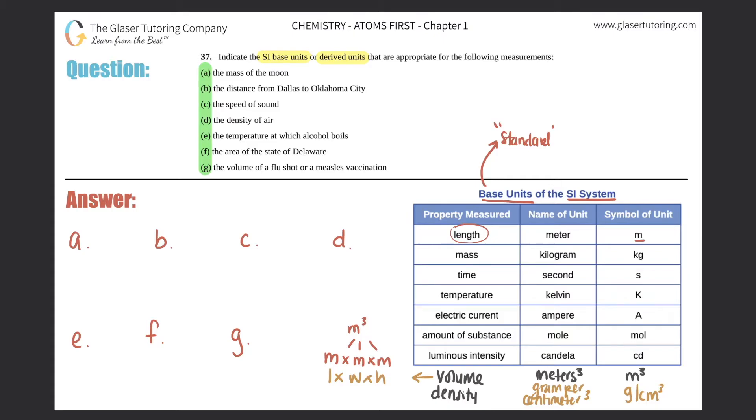So that's this, and the derived units are anything with the prefixes. So for example, the length, the base unit would be a meter. So a derived unit would be your kilometer, your centimeter, your millimeter, anything with those prefixes. So those are your derived units.